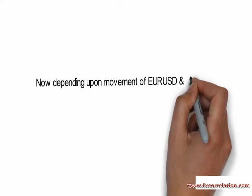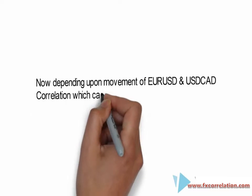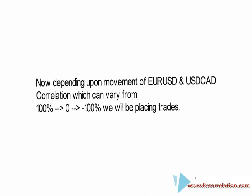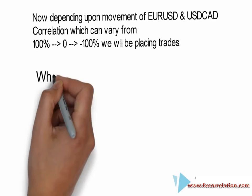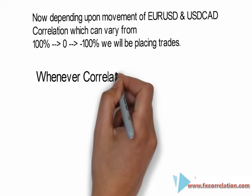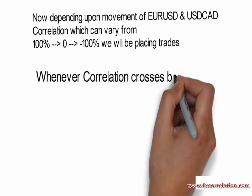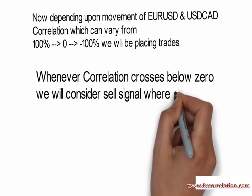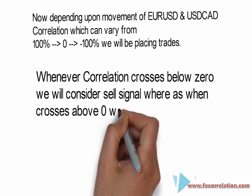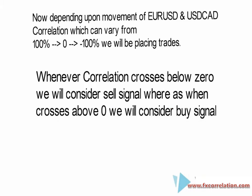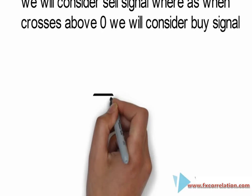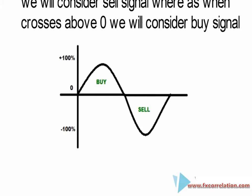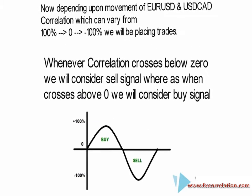Now, depending upon the movement of the EURUSD and USDCAD correlation — which can vary from plus 100% to minus 100% — we will be placing trades. Whenever the correlation crosses below 0, we consider it a sell signal. Whereas when it crosses above 0, we consider it a buy signal. Here is a graphical representation for the same.